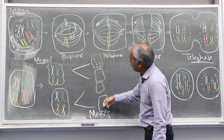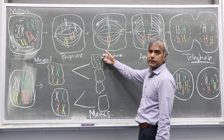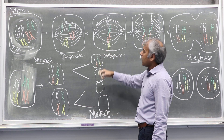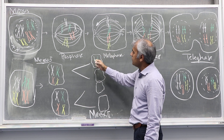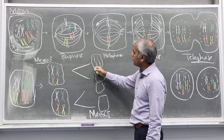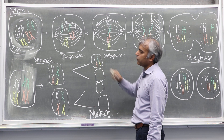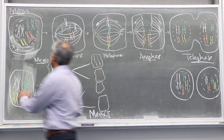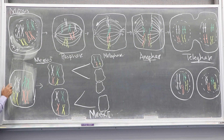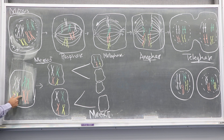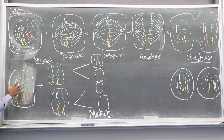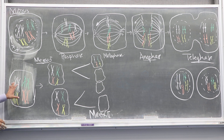Each cell will look like this. How many chromosomes are there? Four. How many chromosomes are there in the mother cell? Eight. Four pairs of chromosomes in the mother cell — the diploid cell.